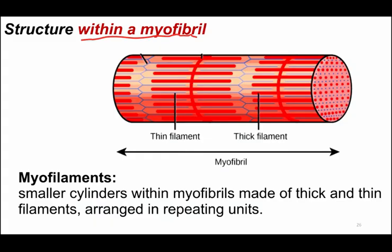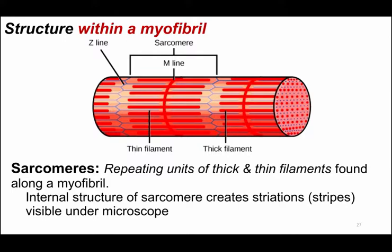We're going to look in more detail. That repeating structure is called a sarcomere — 'mere' means unit, so the sarcomere is the flesh unit. The sarcomere is the contractile unit of skeletal muscle, and sarcomeres are defined by the distance between Z-lines or Z-discs, from one Z-disc to the next. The middle of the sarcomere is the M-line. Thin filaments are anchored at the Z-line and thick filaments are anchored at the M-line.